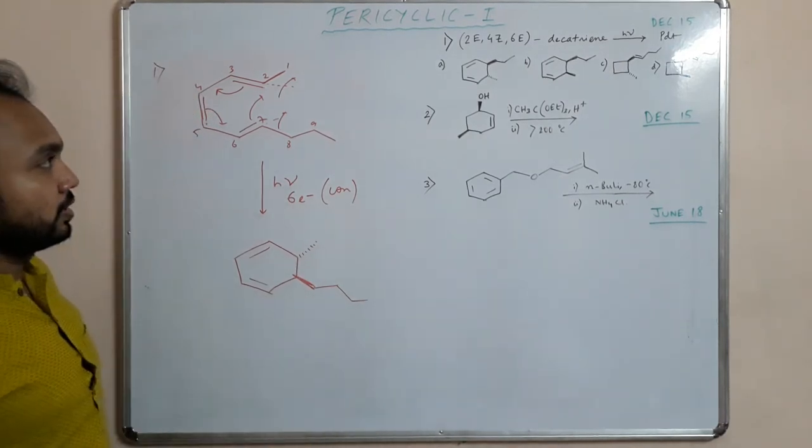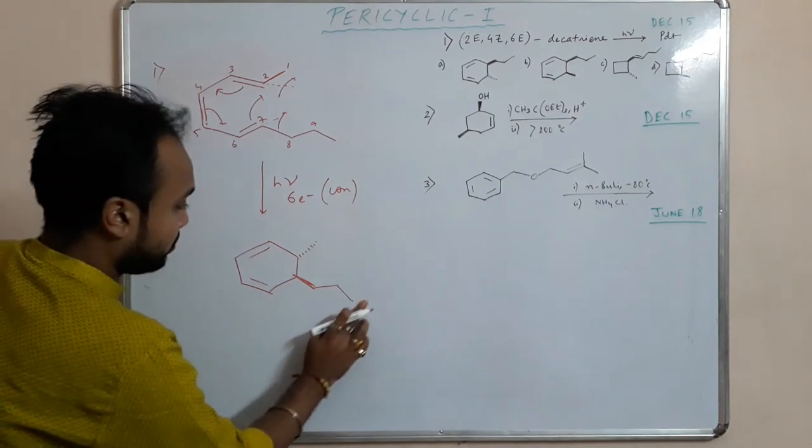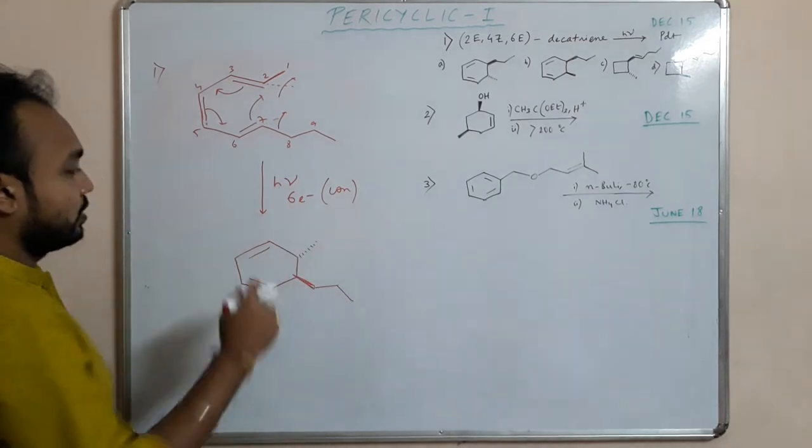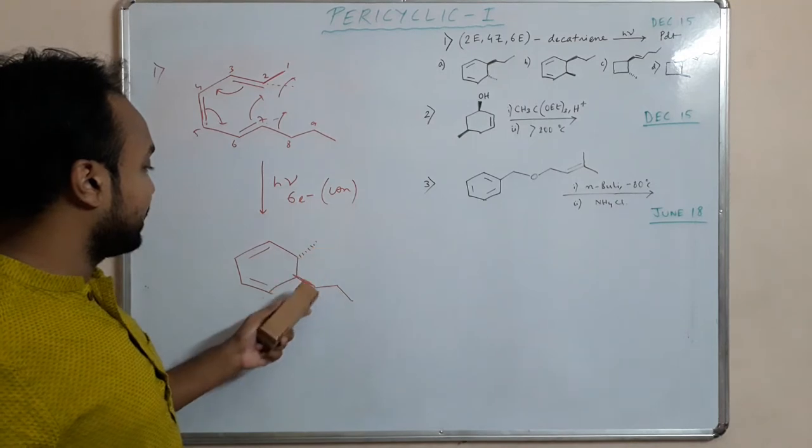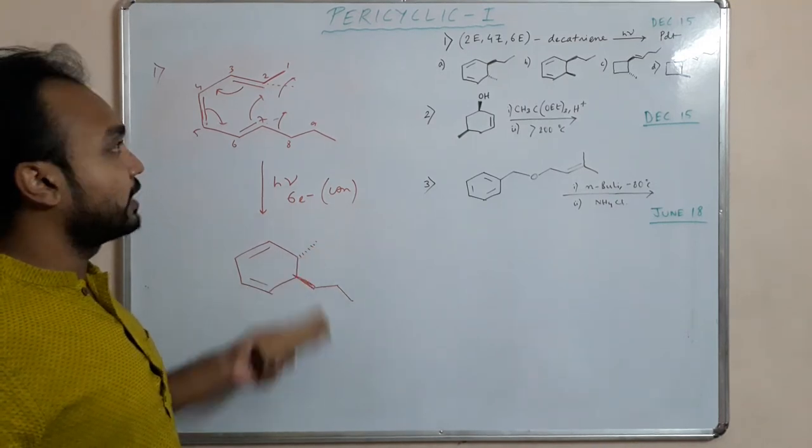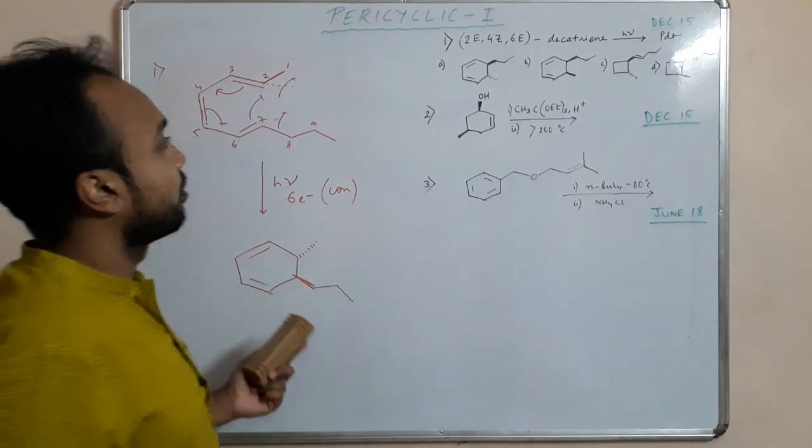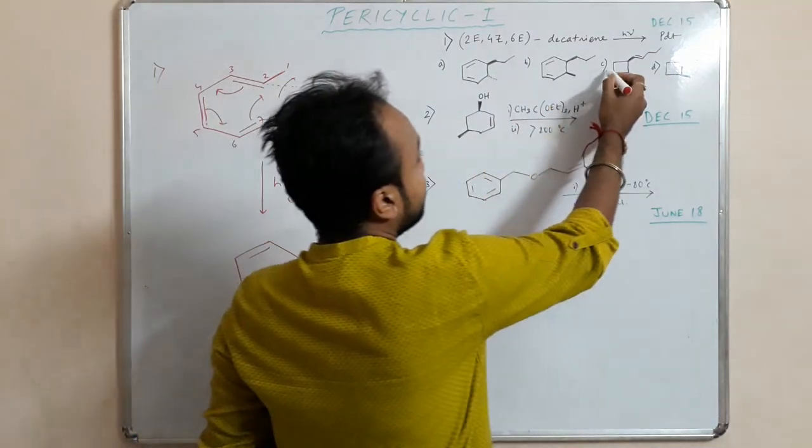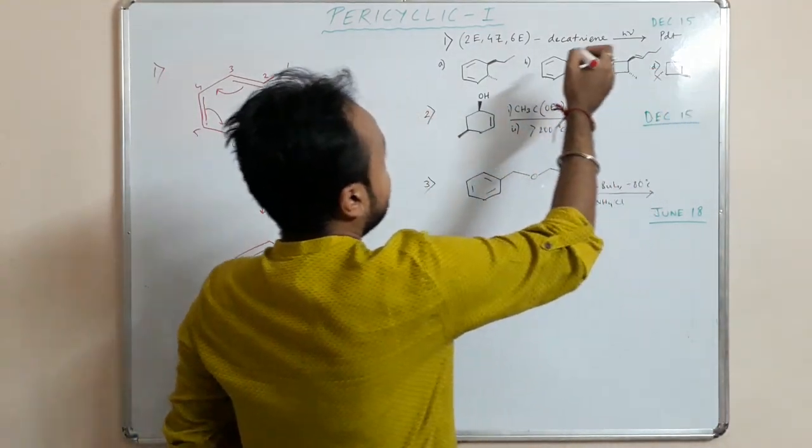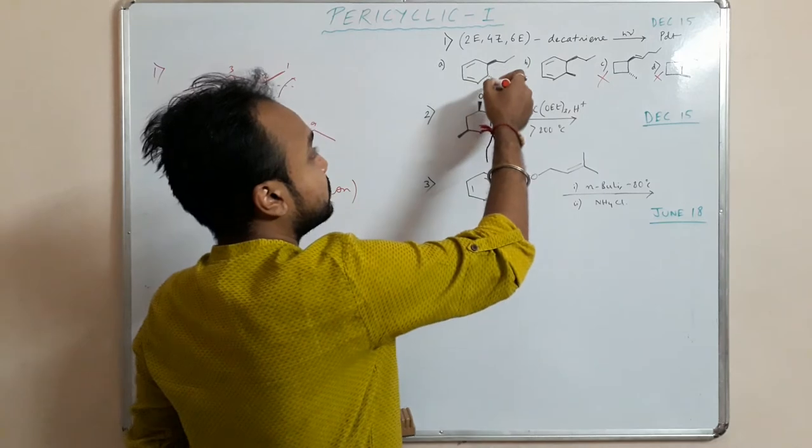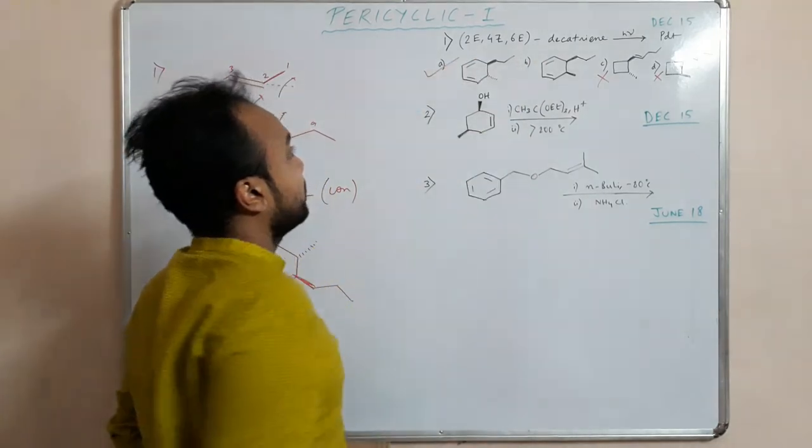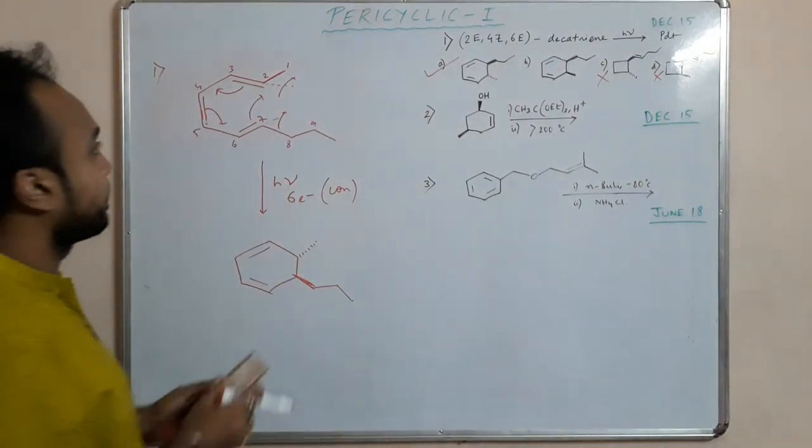This is the structure - 1,2,3,4...10. This methyl and this group will be trans to each other, it will be 6-membered. This option will not be correct. This is cis to each other, this is trans to each other. Correct option is trans to each other, fine.